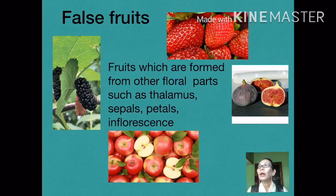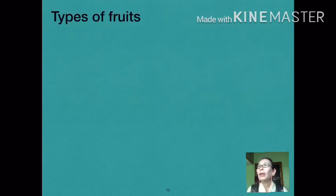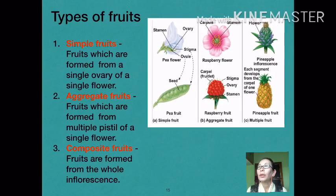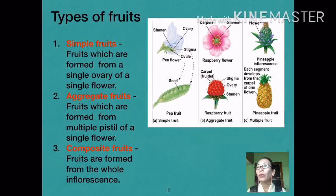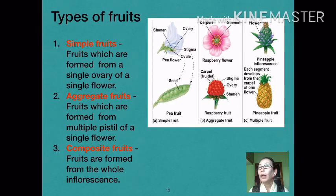Broadly speaking, fruits can be grouped into three types: simple, aggregate, and composite fruits. Fruits formed from a single ovary of a single flower are called simple fruits — this includes mango, oranges, grapes, and pea. If fruits are formed from multiple pistils of a single flower, they are called aggregate fruits, as in raspberry and blueberries. Some fruits are formed from the whole inflorescence and are called composite or multiple fruits, which includes pineapple, jackfruit, mulberry, and fig.